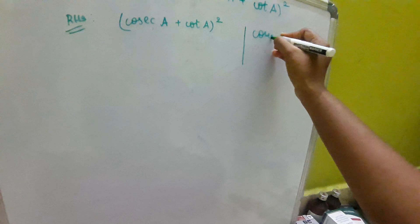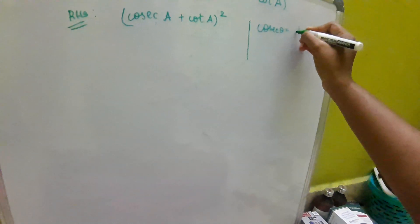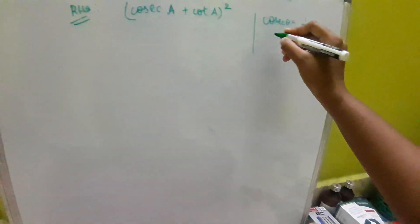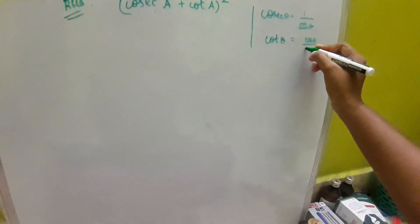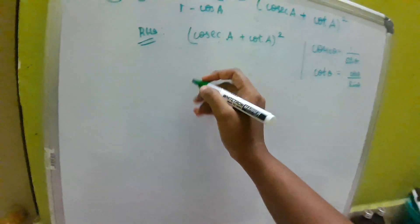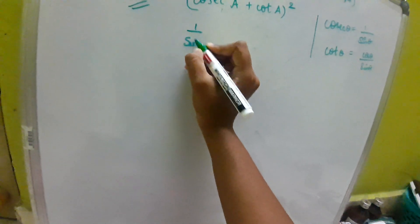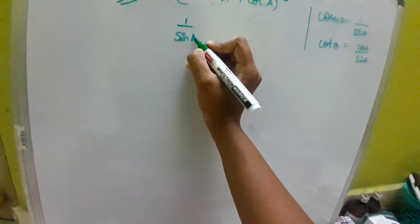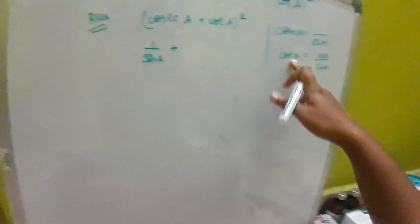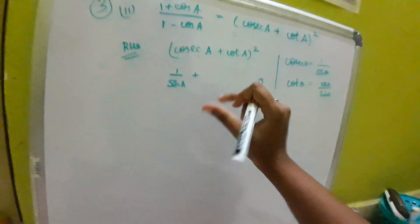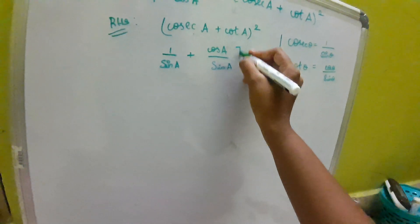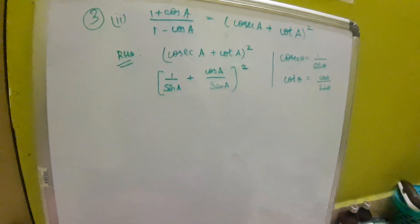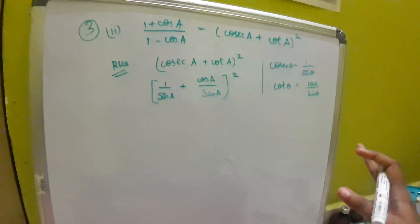I am writing the formulas on the side. Cosecant θ equals 1 divided by sin θ, and cot θ equals cos θ divided by sin θ. Using these, I am applying the formulas: instead of cosecant A I write 1 by sin A, and instead of cot A I write cos A divided by sin A, the whole square.